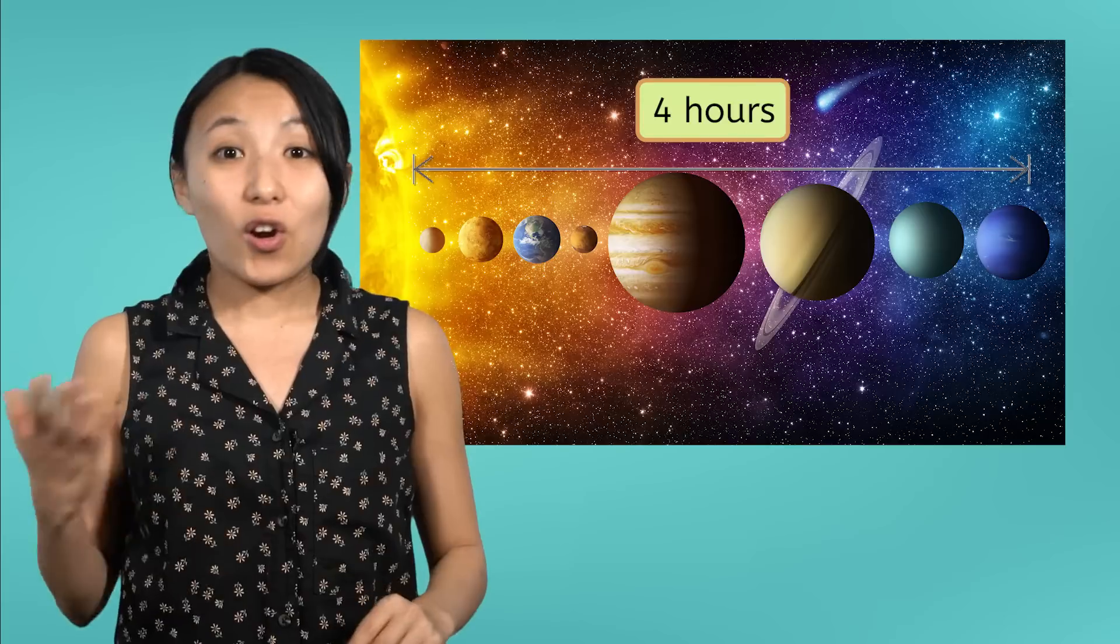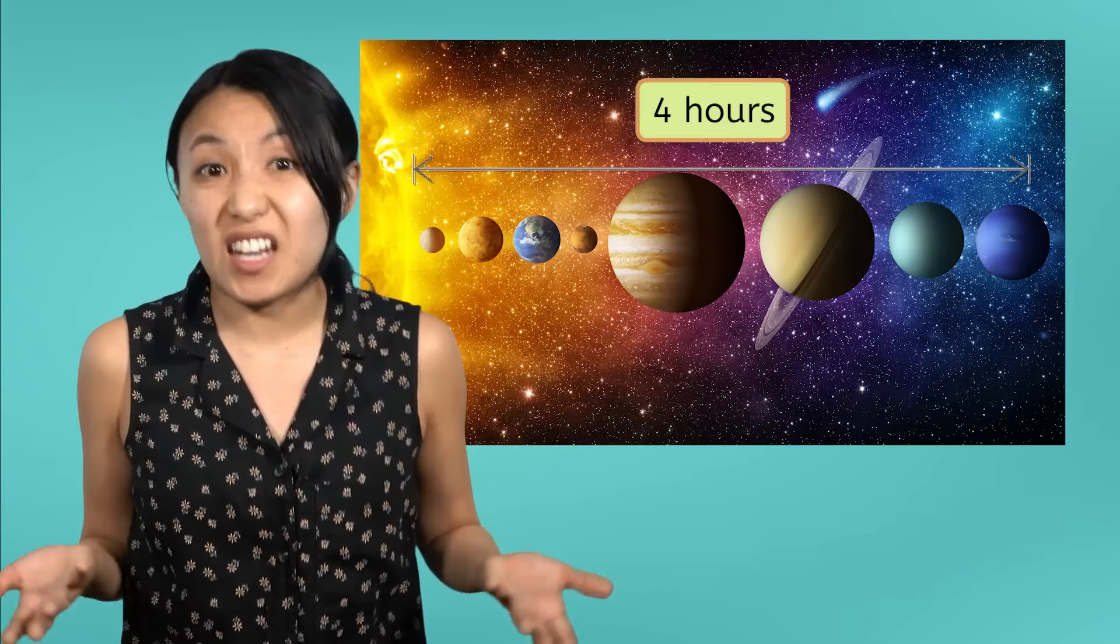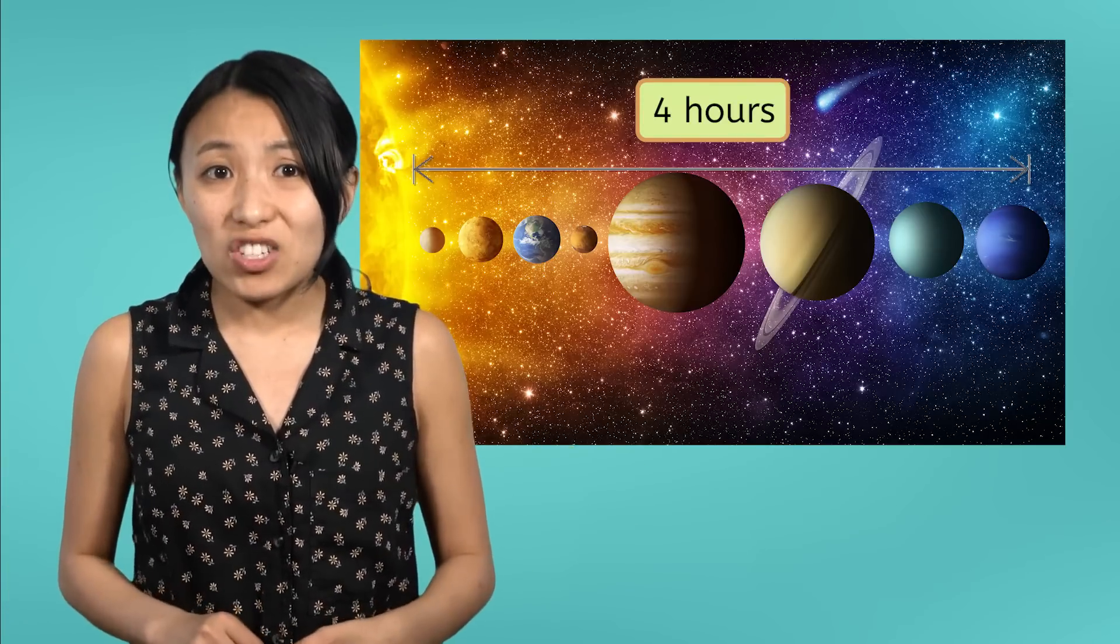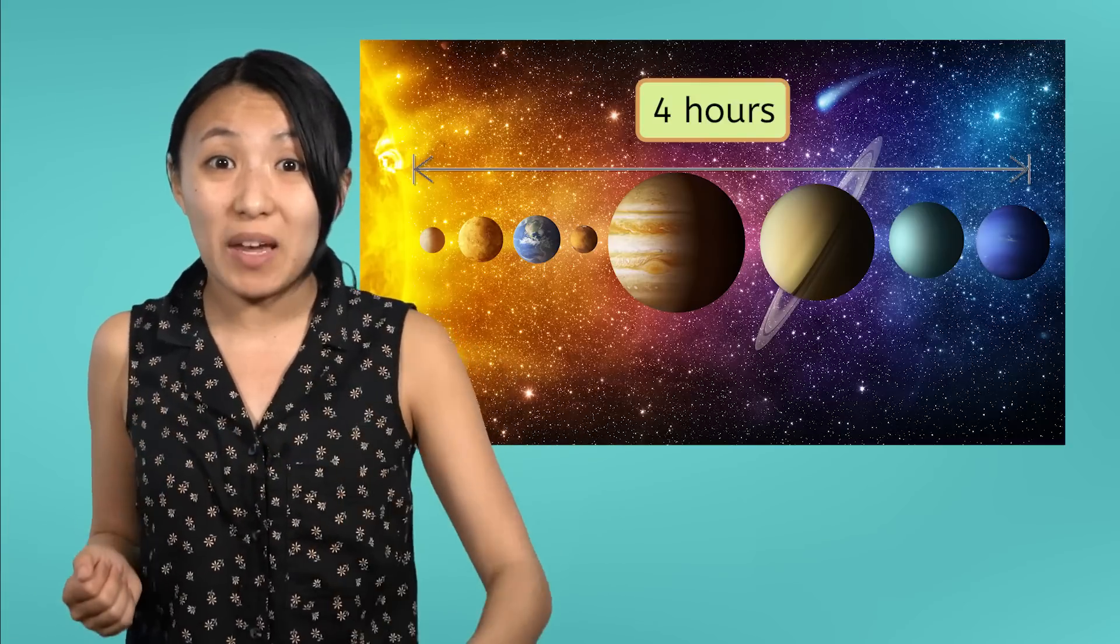In cosmic terms, Earth and Neptune are practically neighbors. So, imagine how long it takes for light to cover the vast expanses of space.